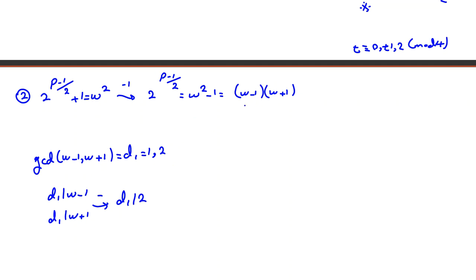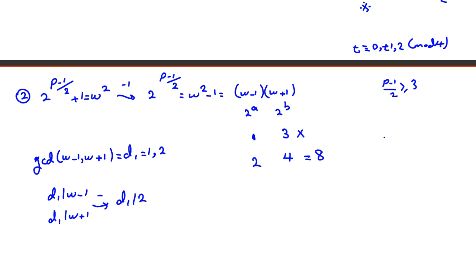Since the product (w-1)(w+1) = 2^((p-1)/2) is a power of 2 with exponent at least 3: if gcd = 1, both factors must be powers of 2, so the smaller one (w - 1) must be 1, giving w = 2 and w + 1 = 3 — contradiction. If gcd = 2, then w - 1 = 2, so w = 3, w + 1 = 4, and 2 × 4 = 8 = 2³. So 2^((p-1)/2) = 2³, meaning (p-1)/2 = 3, giving p = 7.